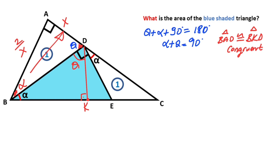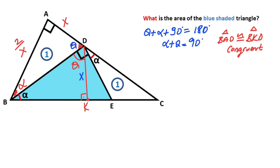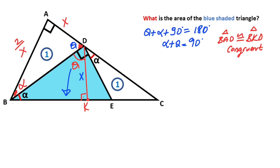Therefore, if there is an x unit opposite to alpha, then the opposite of alpha must equal x units. Likewise, if there is 2 over x opposite to theta, then the side opposite theta must also equal 2 over x units.